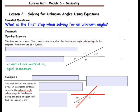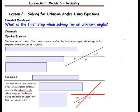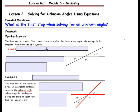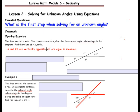In the opening exercise, two lines meet at a point. In a complete sentence, describe the relevant angle relationship in the diagram. Find the values of R, S, and T. A relevant angle relationship is that angle S and 25 degrees are vertically opposite and equal in measure. So these angles formed by intersecting lines are equal in measure, making angle S equal to 25 degrees.